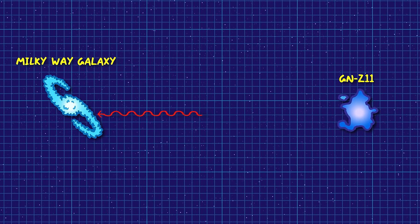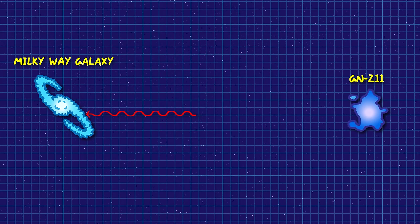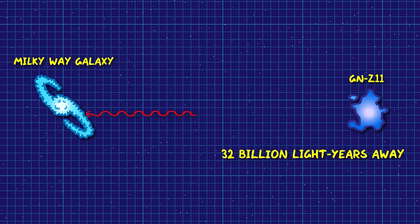And today, the light finally reaches the lenses of the telescopes of us semi-intelligent apes, and from the redshift of the light, we can tell that right now, GNZ 11 is 32 billion light-years away.